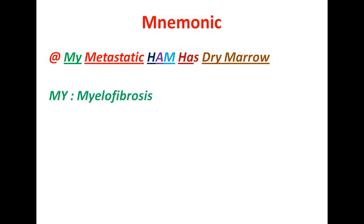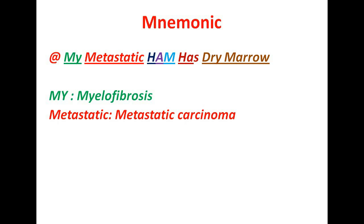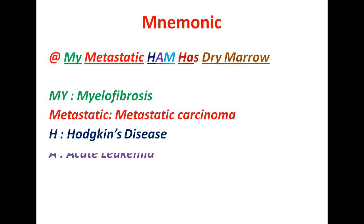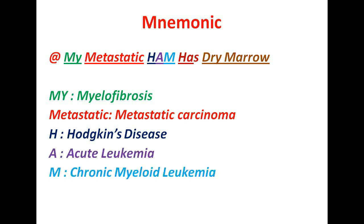My Metastatic Ham Has Dry Marrow — where 'My' is for myelofibrosis, 'Metastatic' is for metastatic carcinoma, 'H' is for Hodgkin's disease, 'A' is for acute leukemia, 'M' is for chronic myeloid leukemia, and 'A' is for acute leukemia.